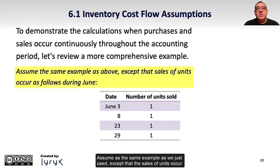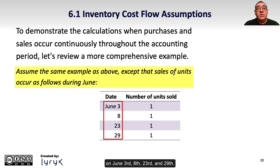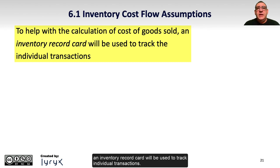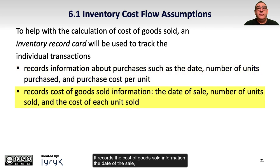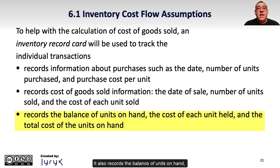Assume the same example as we just used, except that the sales of units occur on June 3rd, 8th, 23rd, and 29th. To help with the calculation of cost of goods sold, an inventory record card will be used to track individual transactions. This card records information about purchases such as the date, number of units purchased, and the purchase cost per unit. It also records the cost of goods sold information: the date of the sale, number of units sold, and the cost of each item sold.